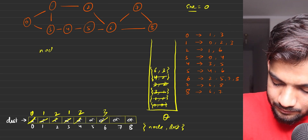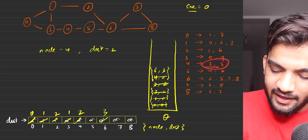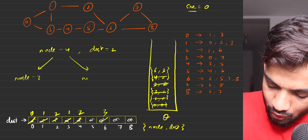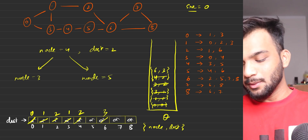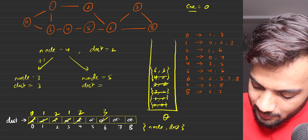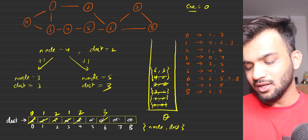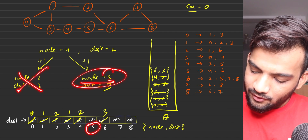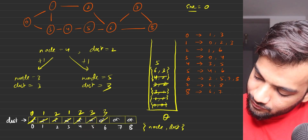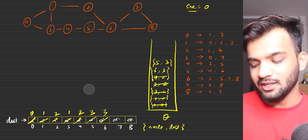Next is node four comma two. Node four's neighbors are three and five. The new distance for each would be two plus one, which is three. Node three was already reached at one — discarded. Node five was at infinity, so we update it to three and push five comma three into the queue.